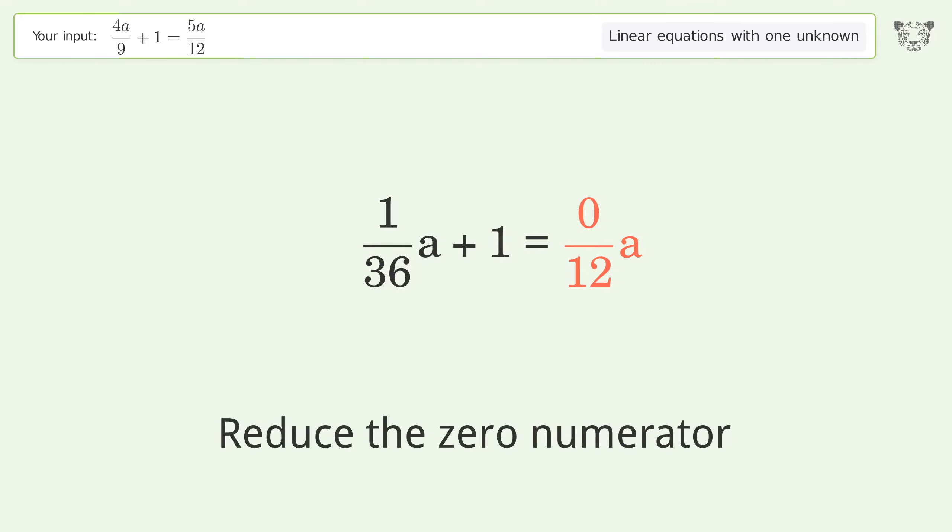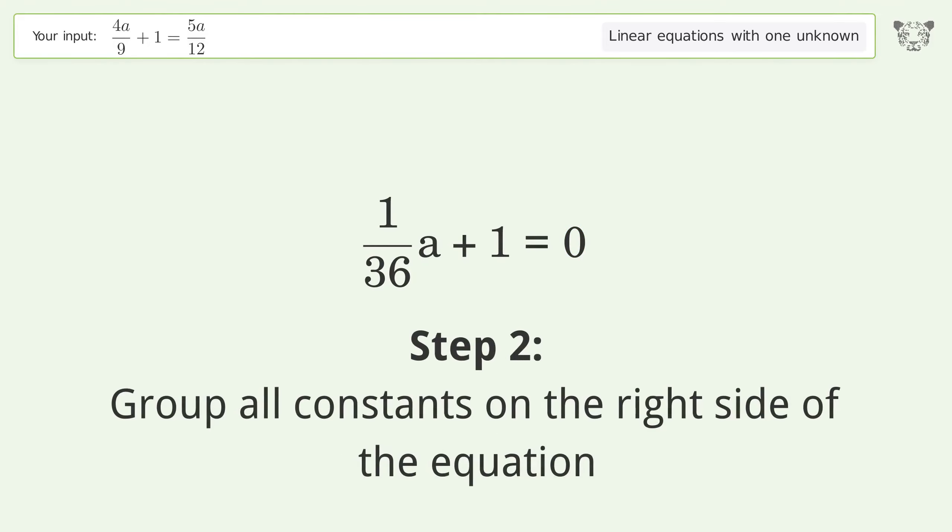Reduce the zero numerator. Simplify the arithmetic. Group all constants on the right side of the equation.